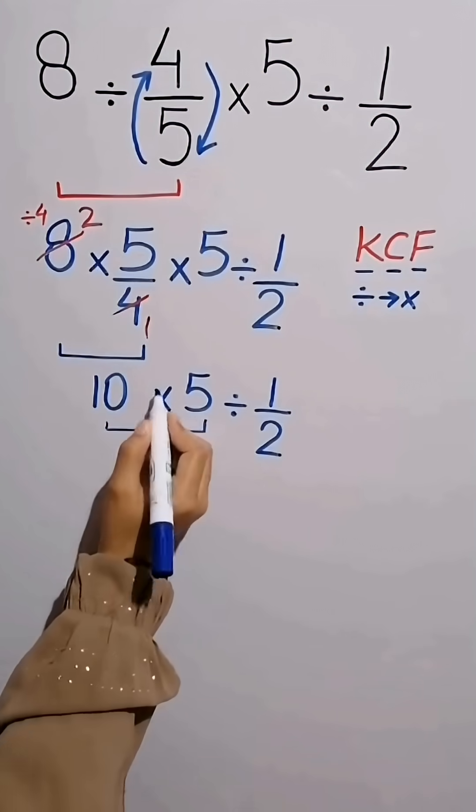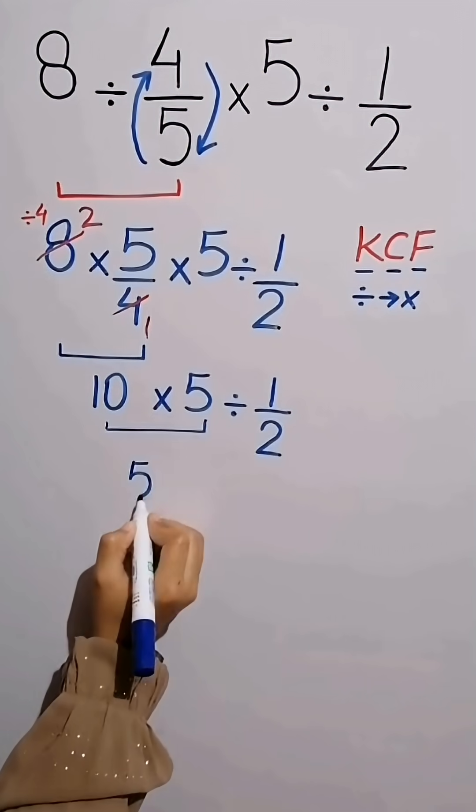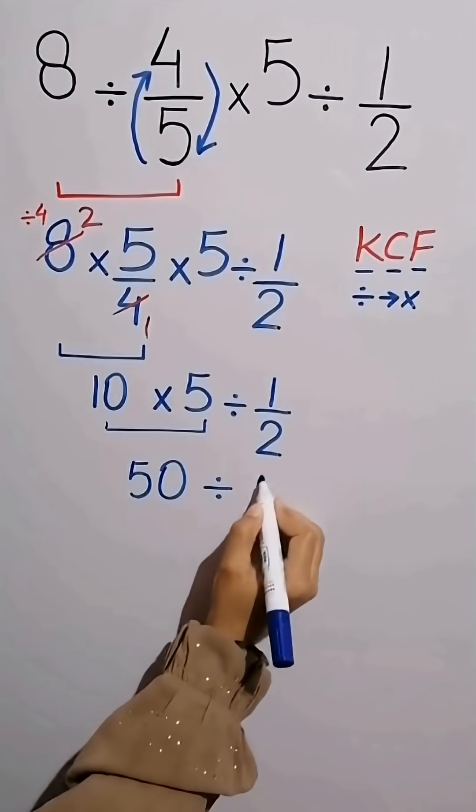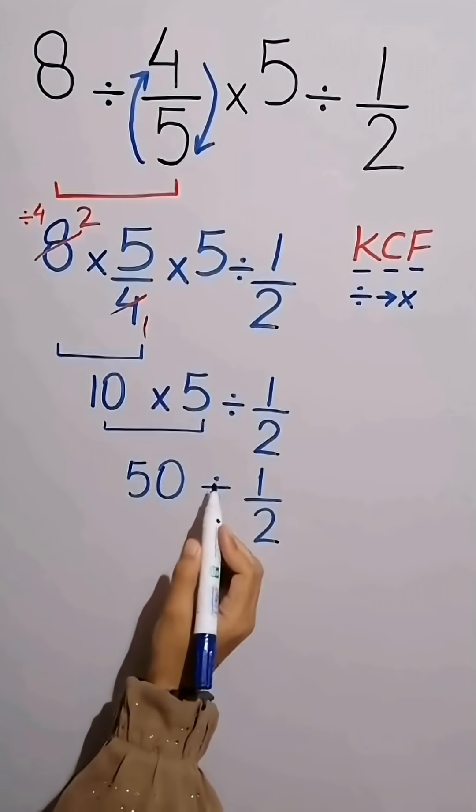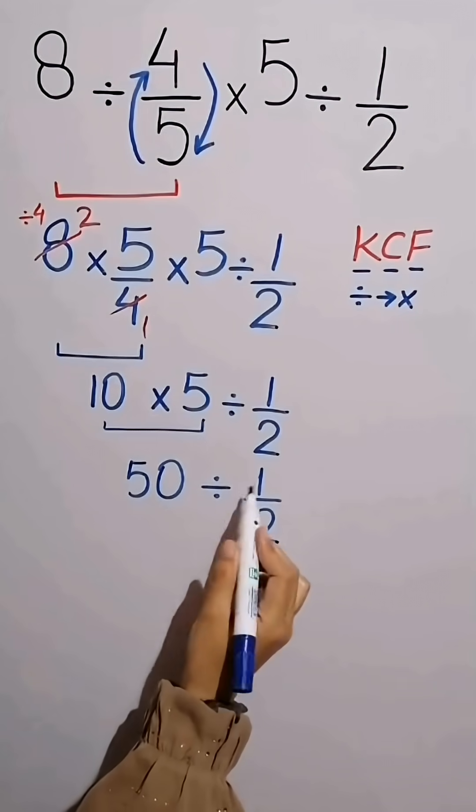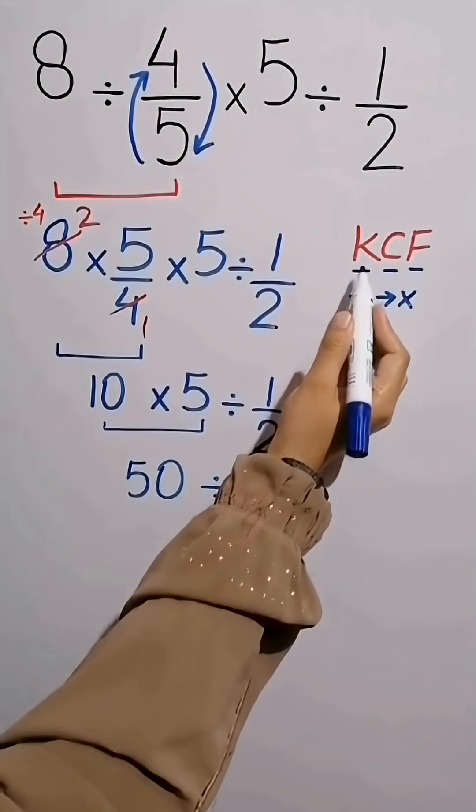Next we do multiplication between 10 and 5 that equals 50, and bring down remaining value as it is. Now we do division between 50 and 1 over 2, so again we apply KCF rule.